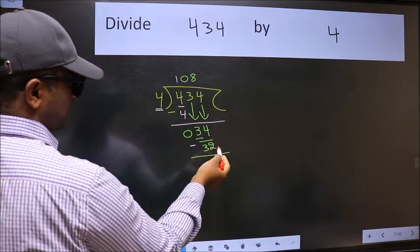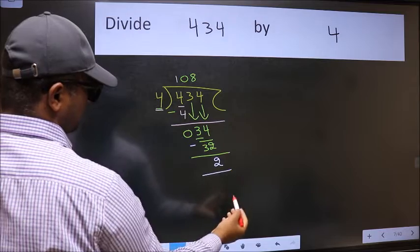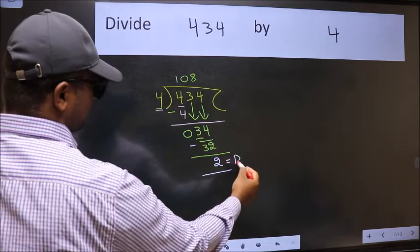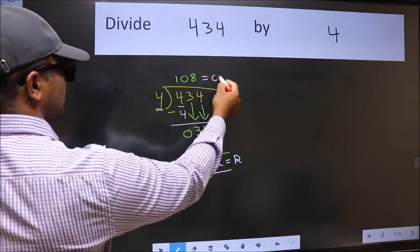We get 2. No more numbers to bring it down, so we stop here. This is our remainder and this is our quotient.